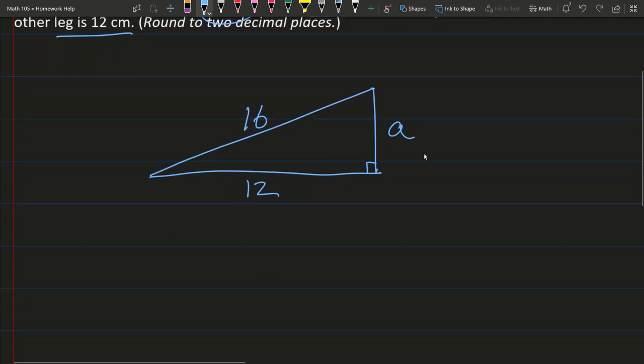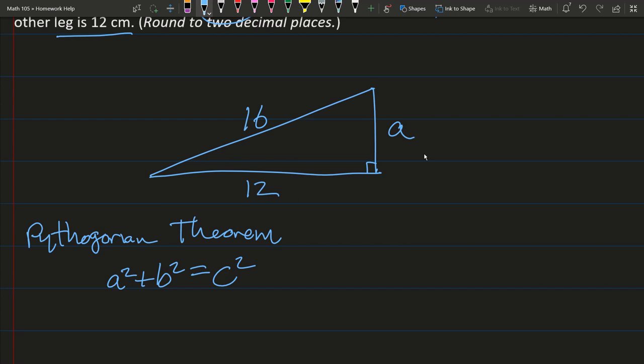And now we're going to use the Pythagorean theorem. It says A squared plus B squared equals C squared, where C is the hypotenuse.